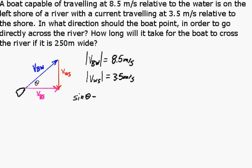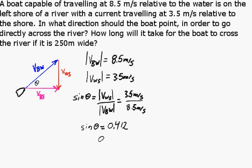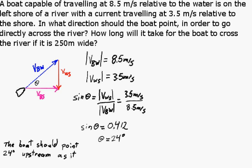So the sine of that angle will be opposite over hypotenuse, so it will be 3.5 meters per second over 8.5 meters per second. So the sine of that angle will be 0.412, and the angle will be 24 degrees. So the boat should point 24 degrees upstream as it travels across the river.